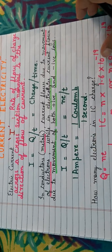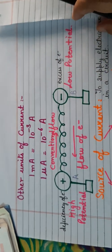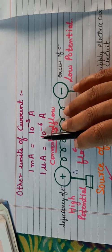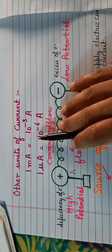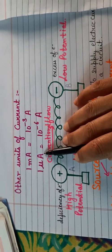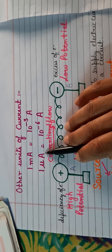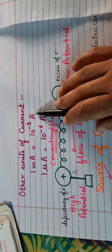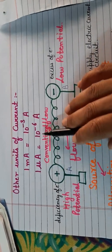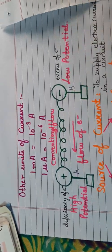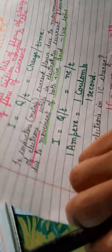There are also smaller units of current. The SI unit is ampere, but smaller units are milliampere and microampere. One milliampere is equal to 10⁻³ amperes, and one microampere is equal to 10⁻⁶ amperes. These are the smaller units of current.